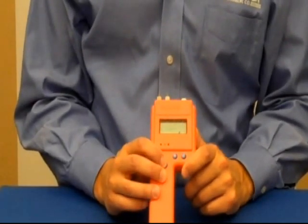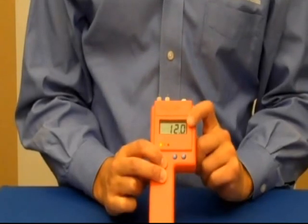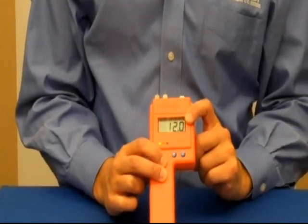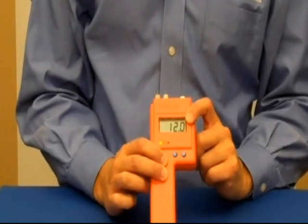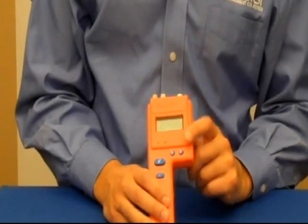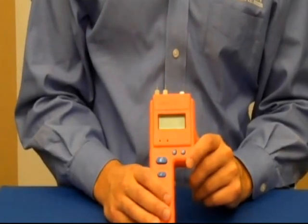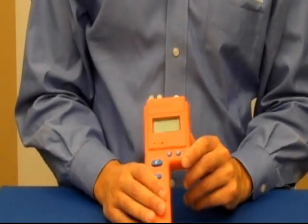The meter also has a built-in calibration check. By just pressing these two buttons, it tells you it reads 12.0 and that's an indication that the meter is in electrical calibration. That's important to do periodically before you take measurements just to make sure that the meter is in calibration.